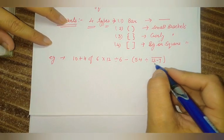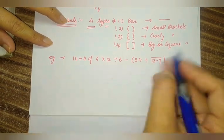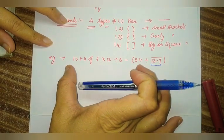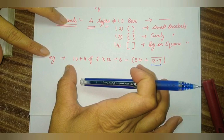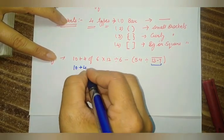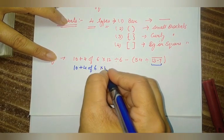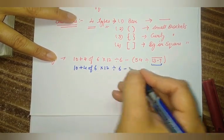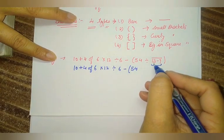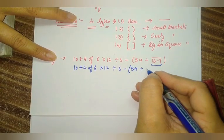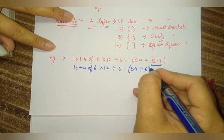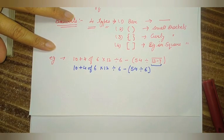So: 10 plus 4 of 6 multiply by 12 divide by 6 minus 54. Whenever we have 13 minus 7, we directly write the result here. When we subtract, we get 6. Now we have solved the bar. Then after, the second step is to solve the small bracket, but to remove the small bracket, first we solve whatever operation is given inside the bracket.